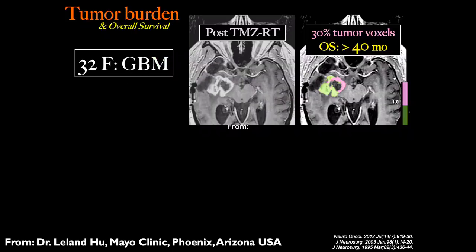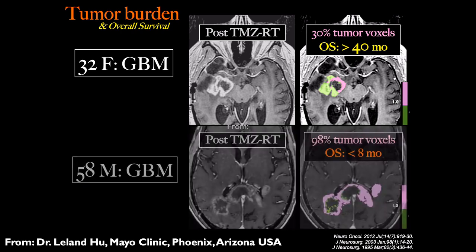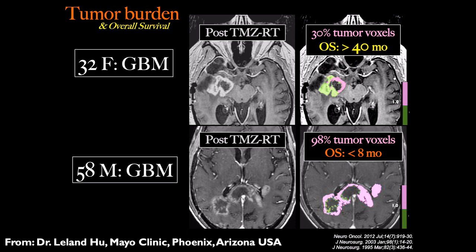Here's another example of using fractional tumor burden. For the patient with 30% tumor voxels, the overall survival was greater than 40 months. For another patient whose FTB showed 98% of the enhancing lesion was tumor versus treatment effect, overall survival was much less. These examples show that fractional tumor burden provides clinically relevant, important prognostic information that cannot otherwise be obtained from standard imaging.